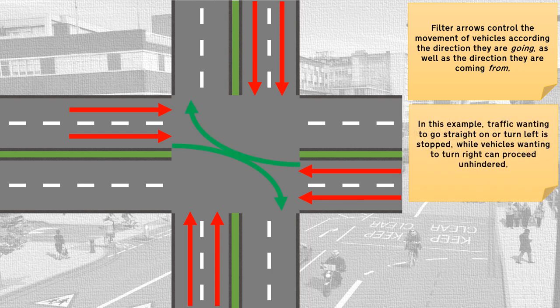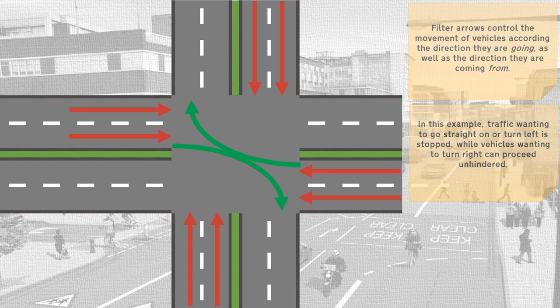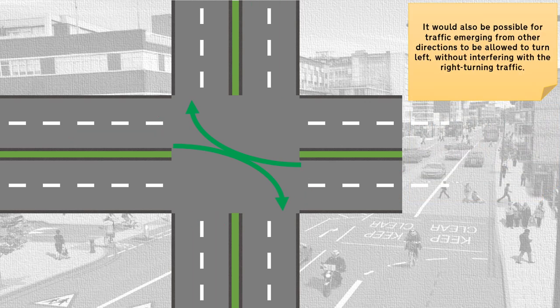In this example, traffic wanting to go straight on or turn left is stopped, while vehicles wanting to turn right can proceed unhindered. It would also be possible for traffic emerging from other directions to be allowed to turn left without interfering with the right-turning traffic.